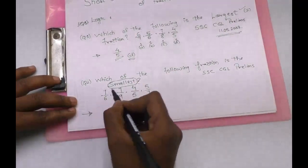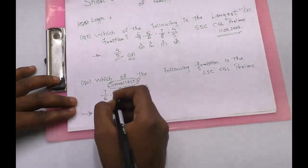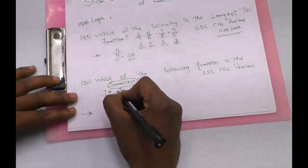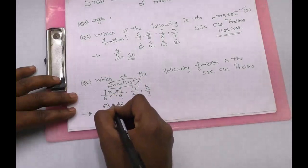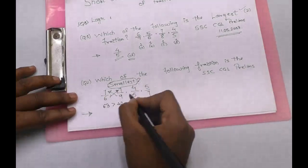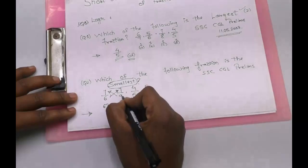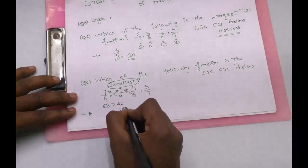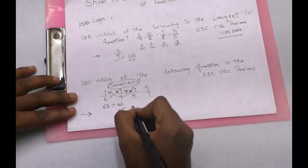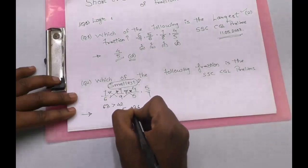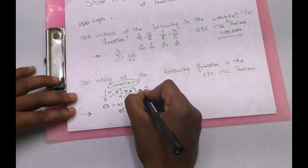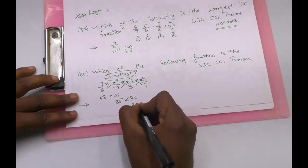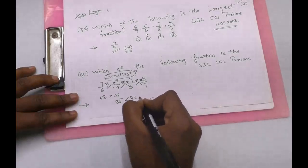The easier method is to cross multiply the fractions. For example, 7 into 9 is 63, and 6 into 7 is 42. Since 63 is bigger than 42, then 7 by 6 is bigger than 7 by 9. Similarly, for 7 by 9 and 4 by 5: 5 into 4 is 20 — wait, 9 into 4 is 36 and 5 into 7 is 35, so 36 is bigger than 35. For the last pair: 7 into 4 is 28, and 5 into 5 is 25.